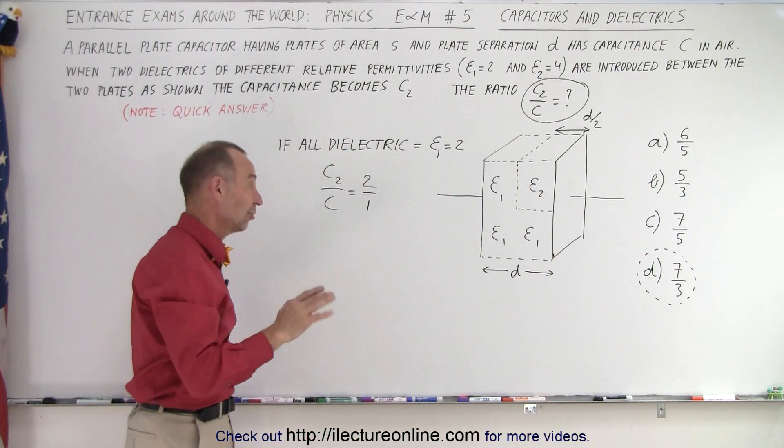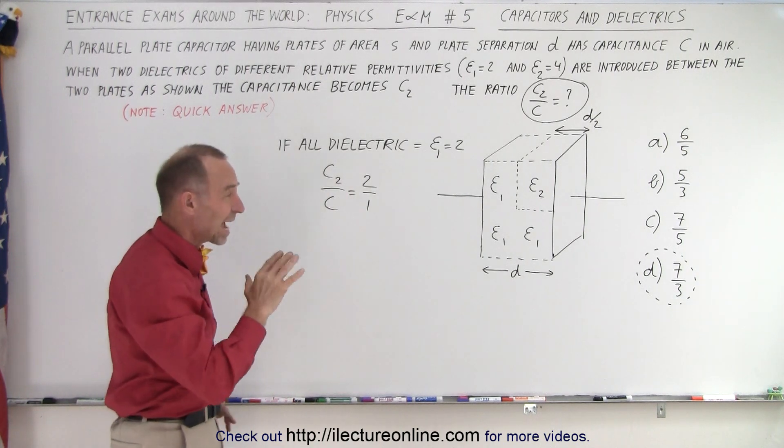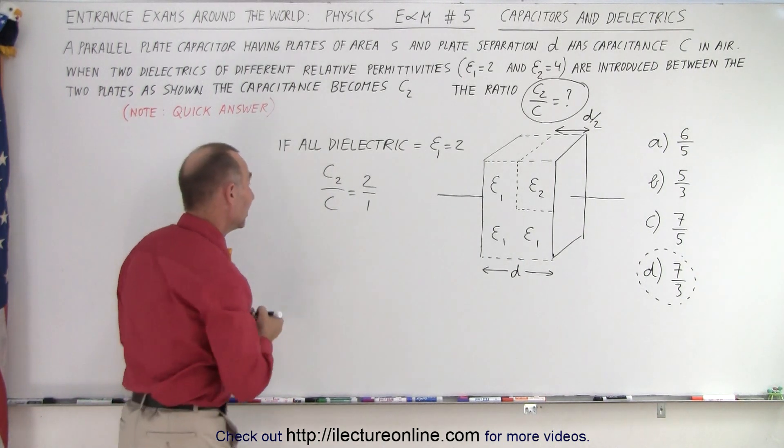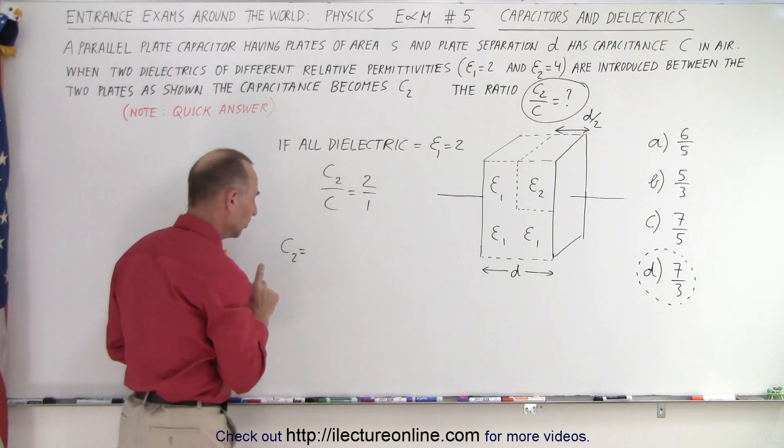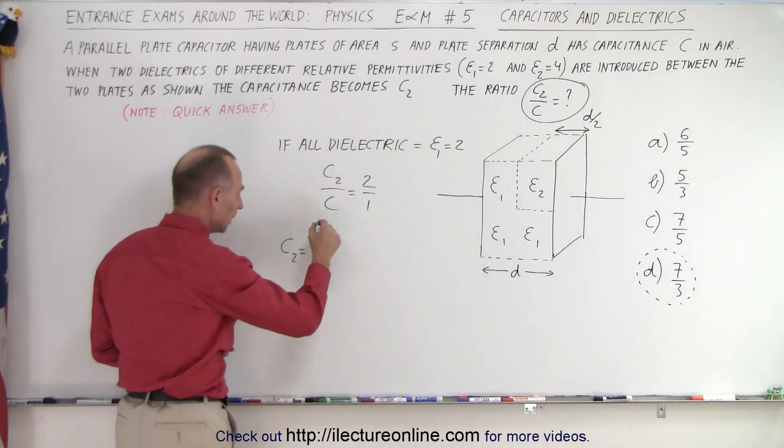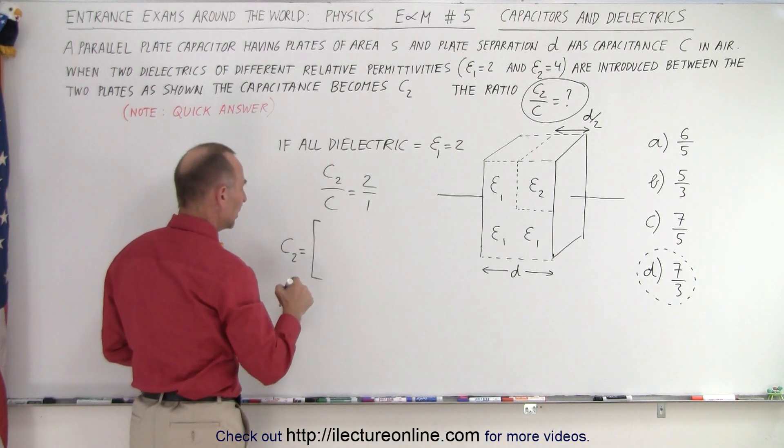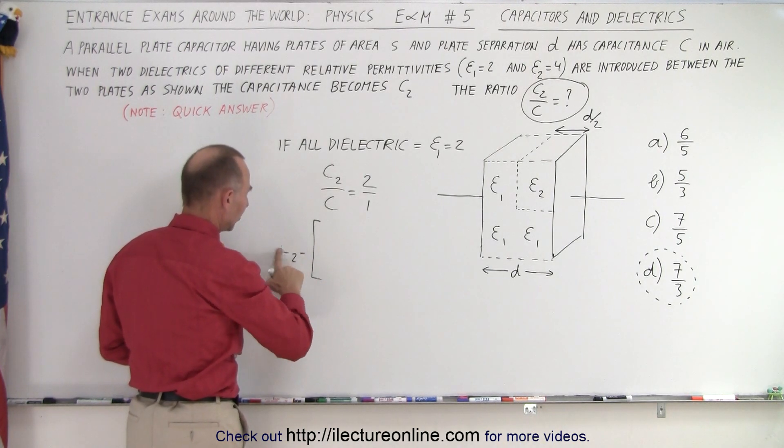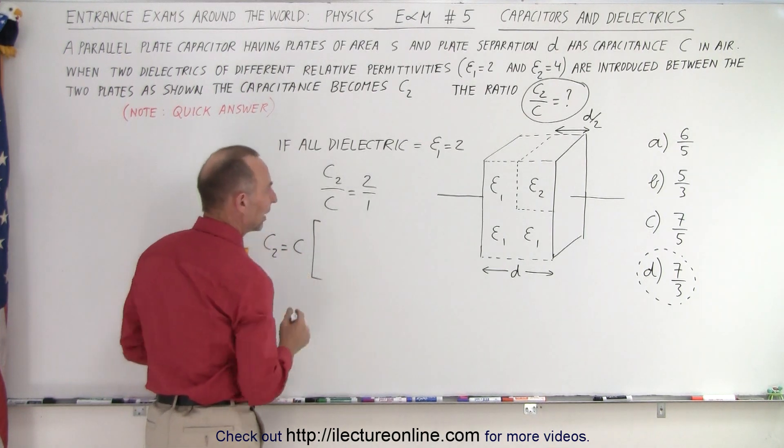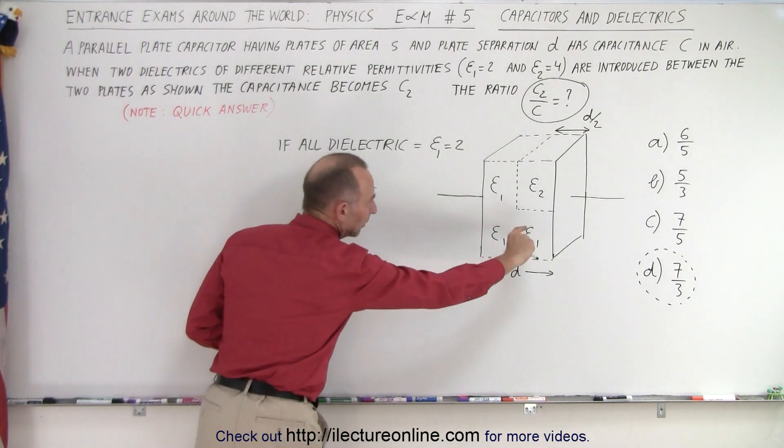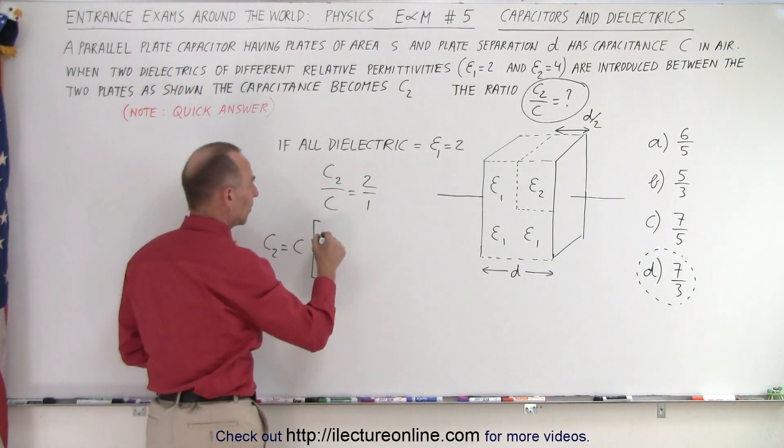Now if you're concerned and say, well not so fast, I want to see the actual result, you can say the following. C2 is equal to... actually I'll write it like this: c2 is equal to c times—now we're going to place in the dielectric. For the bottom part we use the product over the sum, so it's going to be e1 times e1 over e1 plus e1, plus...